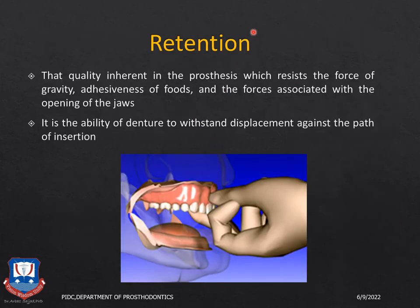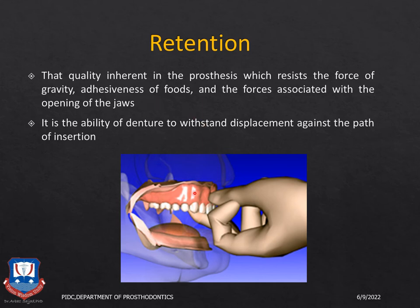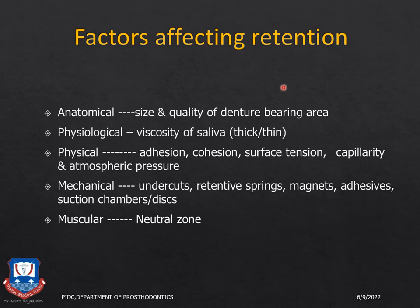Regarding retention: we make impressions — we do not take impressions — in complete dentures, with the primary objective to obtain a prosthesis that is retentive. Retention is the quality inherent in a prosthesis that resists the forces of gravity in a vertical direction — for example, when a patient chews sticky foods or opens the jaws widely. Factors that affect retention include anatomic factors (the size and quality of the denture bearing area — larger arches have better retention) and physiological factors (viscosity of saliva — thick viscous saliva offers poor retention, while thin serous saliva aids retention).